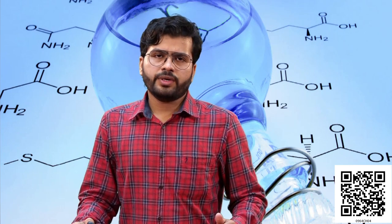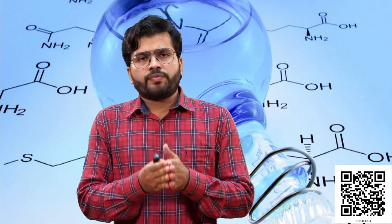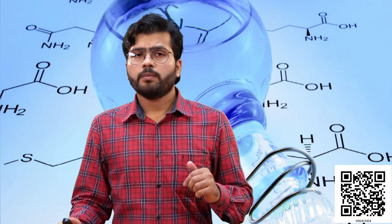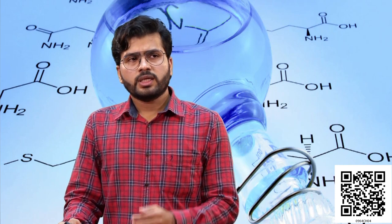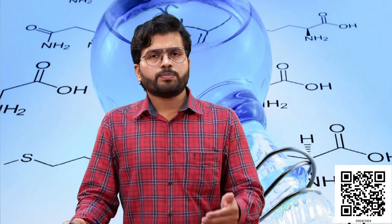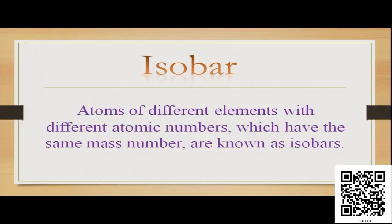Another aspect here — referring to Dalton's atomic theory — he suggested that atoms of two different elements will be different, having different atomic number and different mass number. But this is not always true. It was observed that in case of some elements, although their atomic number is different, their mass number is the same. Atoms of different elements having different atomic numbers but the same mass number are called isobars. Look at the definition: atoms of different elements with different atomic numbers which have the same mass number are known as isobars.